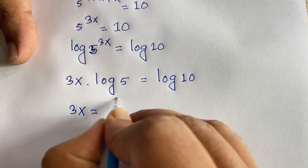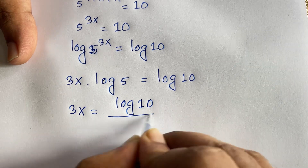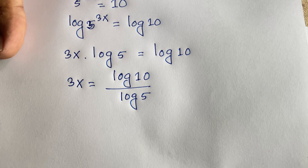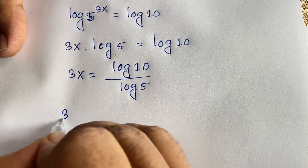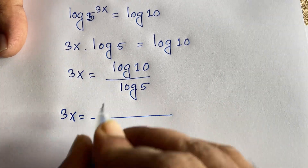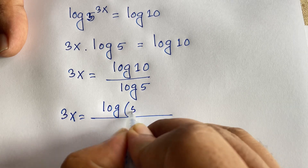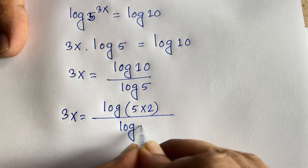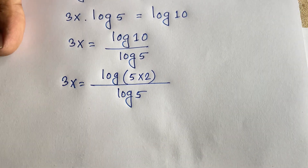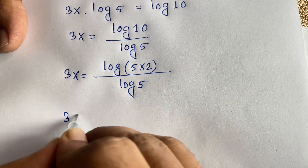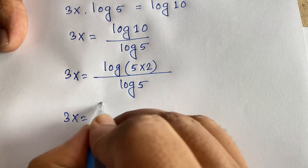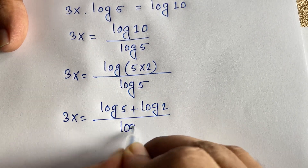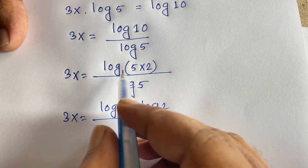So 3x is equal to log 10 over log 5. I divide both sides by log 5. Then 3x is equal to log of 5 times 2, which is log(10), over log 5. This gives us 3x equals log 5 plus log 2, all over log 5.